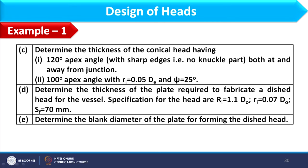In part B we need to determine the thickness of a flat head having plates welded to the end of the shell, with no inside welding. In part C we determine the thickness of a conical head when the apex angle is 120°, with no knuckle part, finding thickness both at and away from the junction. Part C2 has an apex angle of 100° with a knuckle part, where ψ differs from α.